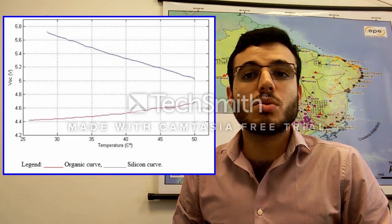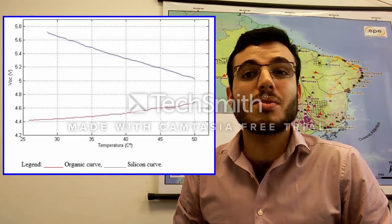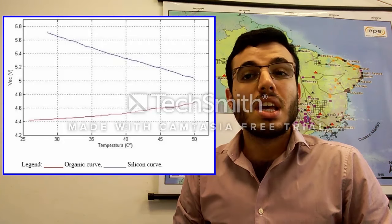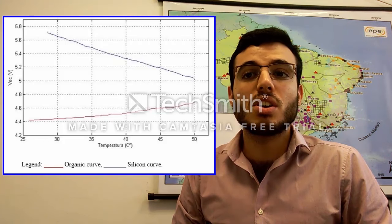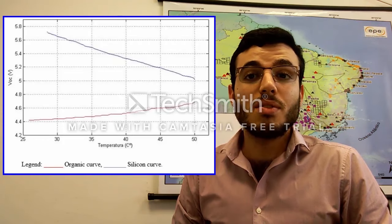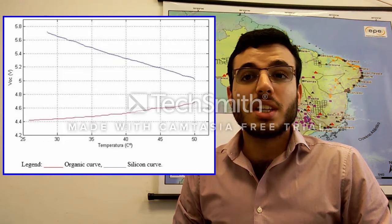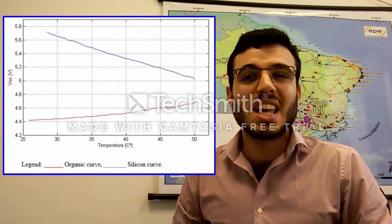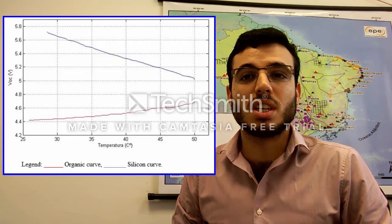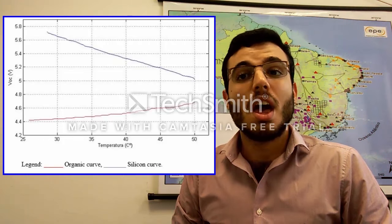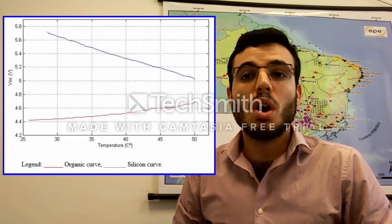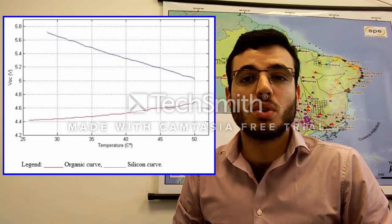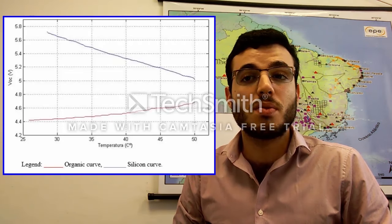The initial temperature for the silicon cell was 28.5 degrees Celsius. This temperature was higher than initially measured in the organic cell because, even with a brief interval, the box maintained a fraction of the previous heat still stored. However, our results were not affected because the goal was to analyze the open circuit voltage VOC according to the positive variations of temperature.